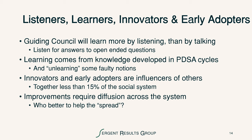Innovators and early adopters are positive influencers of others. Together, they're going to be less than 15% of the people in the social system we're trying to improve. Improvements require diffusion across the system, and who better to help the spread than the guiding council along with the innovators and early adopters in the system?